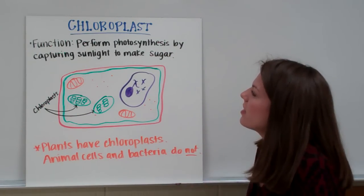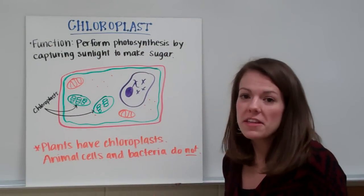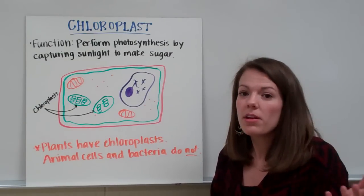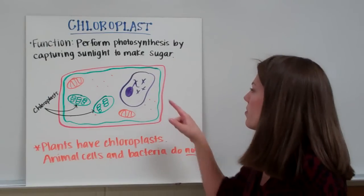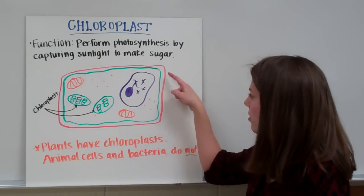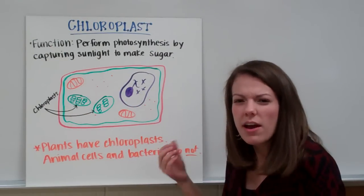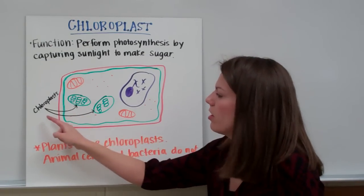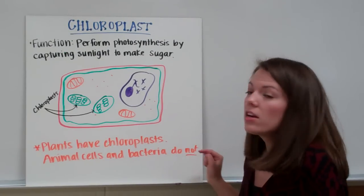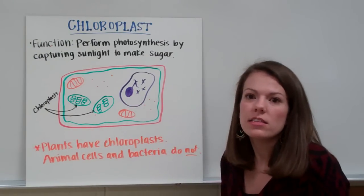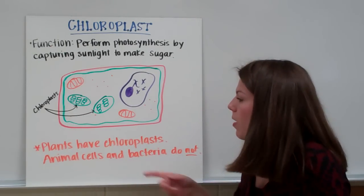The next organelle is a chloroplast. Its function is to perform photosynthesis by capturing sunlight to make sugar, using sunlight and carbon dioxide. In a sketch of a plant cell, chloroplasts look like stacks of coins or stacks of pancakes inside a green structure. Plants have chloroplasts, but animal cells and bacteria do not. So if a cell has chloroplasts, you know it is a plant cell.